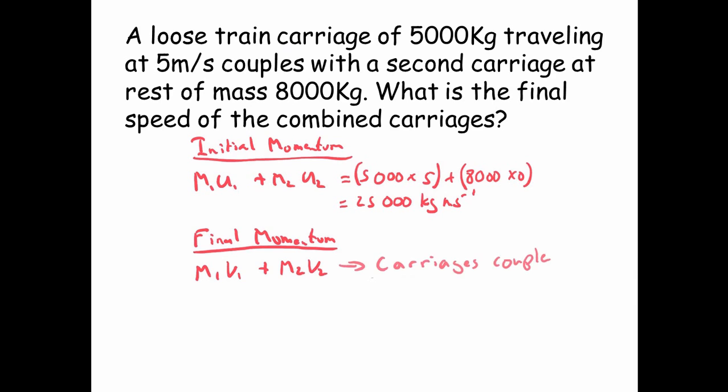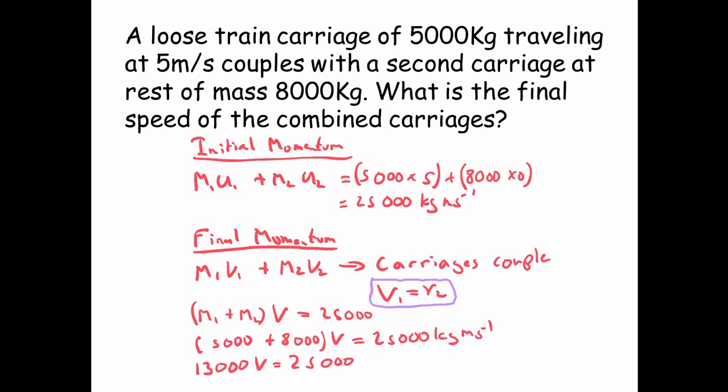The final momentum is M1V1 plus M2V2. Now, the carriages are coupled, so we know V1 is equal to V2. And the nice thing about this is we can put the masses in brackets because we know the velocities are the same. So we get M1 plus M2 all in brackets times by V equals 25,000 kilogram meters per second. Put the masses in. 5,000 plus 8,000 all combined together times by V gives us 25,000 kilogram meters per second. So 13,000 V equals 25,000 kilogram meters per second. Divide by 13,000, so 25,000 divided by 13,000, we get 1.92 meters per second. So that's the combined velocity of the two carriages.